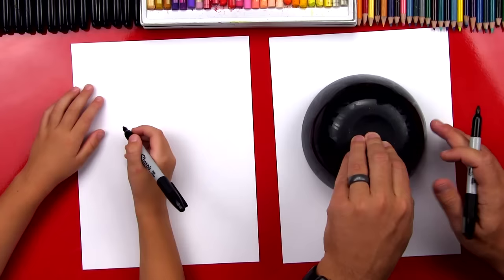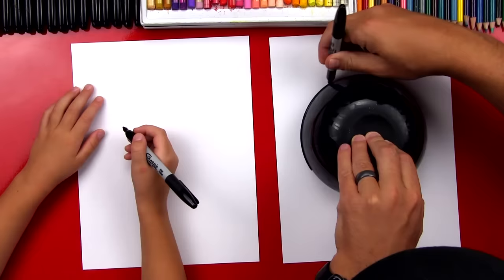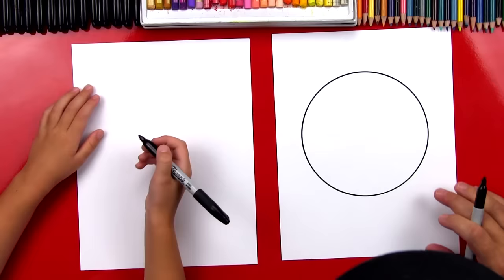Hold it with one hand and then reach around and we're going to trace all the way around our bowl. And we want to make sure we're pressing against it with our markers so that it doesn't get wobbly. Look at that, a perfect circle. Do you want to try? I will help you if you want me to.